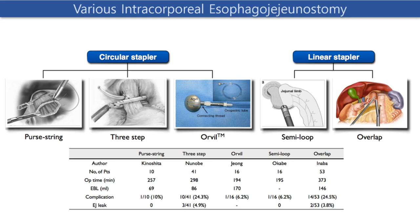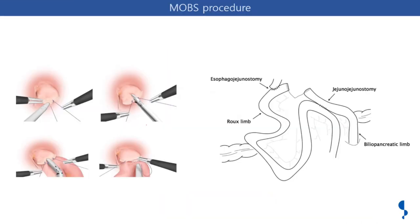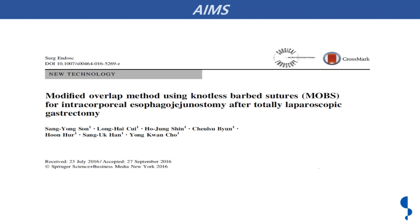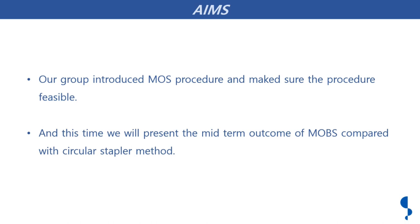There are many intracorporeal EJ anastomosis methods. The circular method consists of three types, and the linear type method consists of two types. In Aju University, MOPS modified overlap Nautilus barbed suture has been performed since 2013. The jejunum lobe is taken up to the esophageal stump, EJ and JJ anastomosis is made, and the jejunum is divided into alimentary and bilio-pancreatic limbs. The department introduced MOPS procedure through 2016. We confirmed MOPS is feasible, and this time we present the midterm outcome of MOPS compared to the circular method.